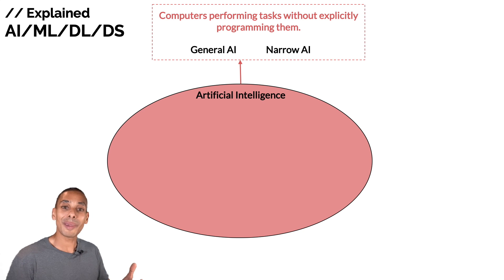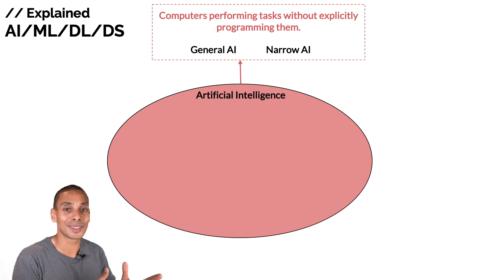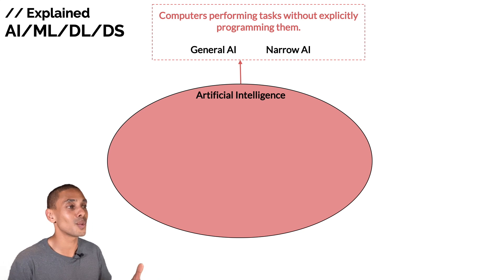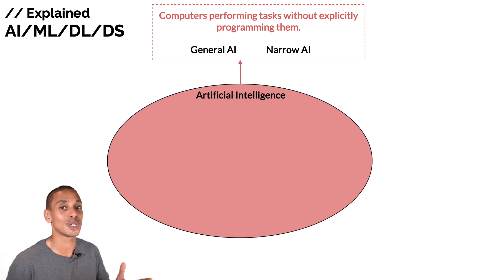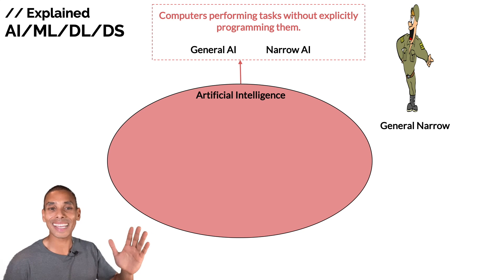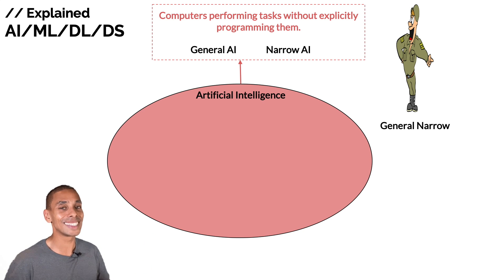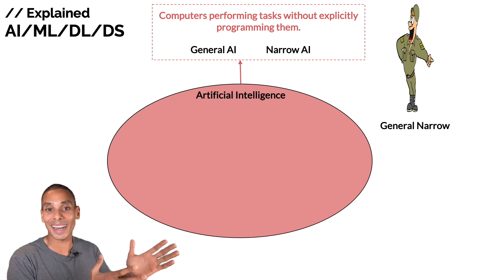I'm going to be painting some visual imagery to help you remember these topics. To remember general and narrow AI, just picture a really narrow or skinny general in your mind. That way you know there are two different types of AI: general and narrow.